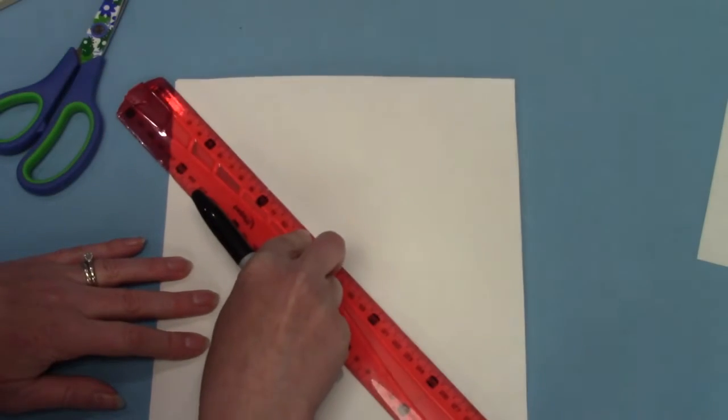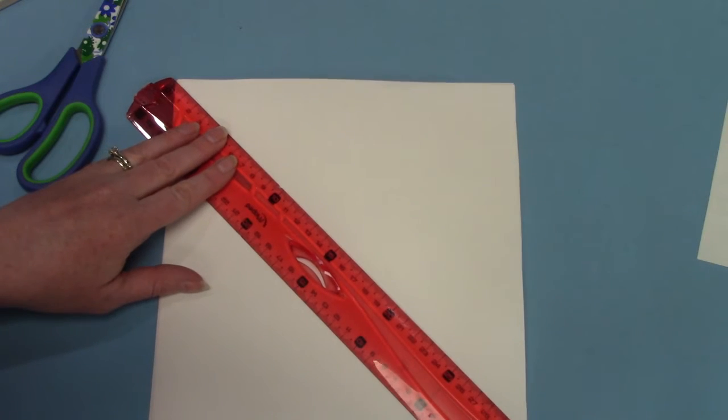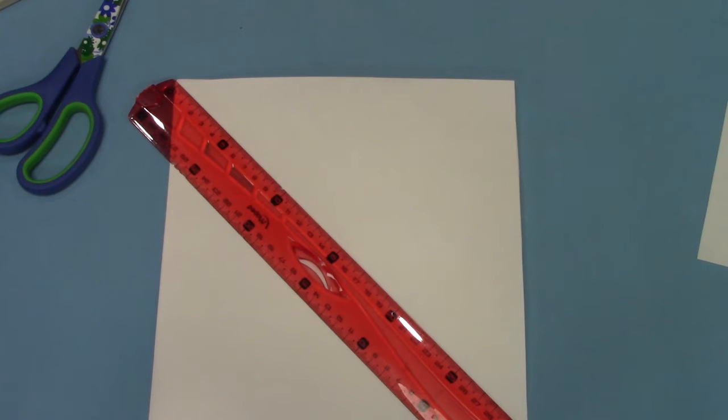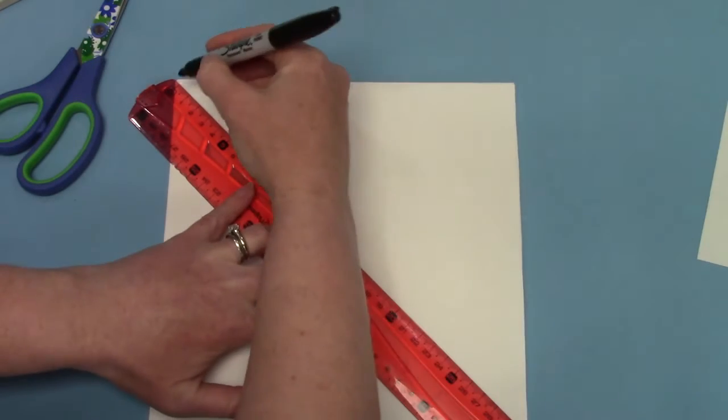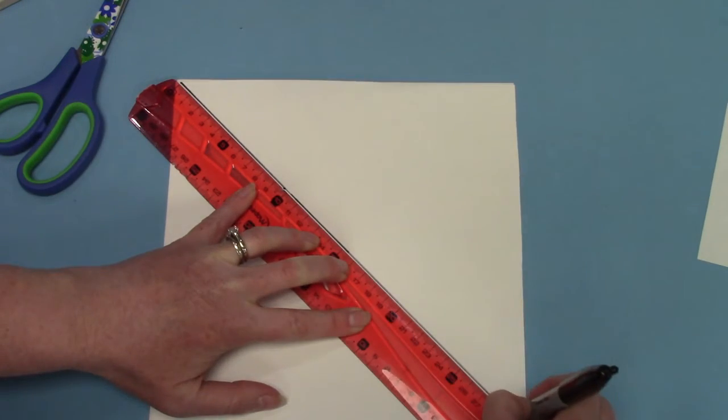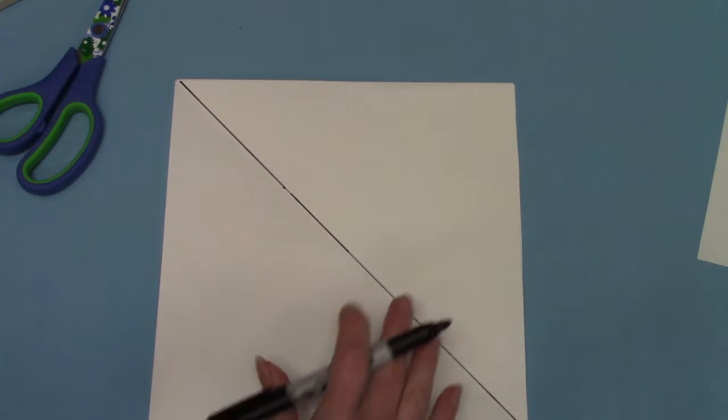So I'm going to take my ruler and I'm going to put it at one corner all the way down to the other corner. And I'm going to hold my ruler because if I don't hold my ruler, it might move when I am drawing my line. I'm going to hold it nice and still, and then I'm going to draw right along the line. So I've divided it right in half.